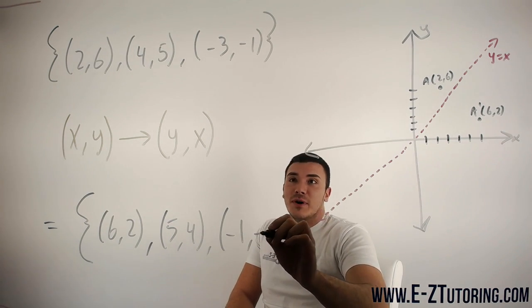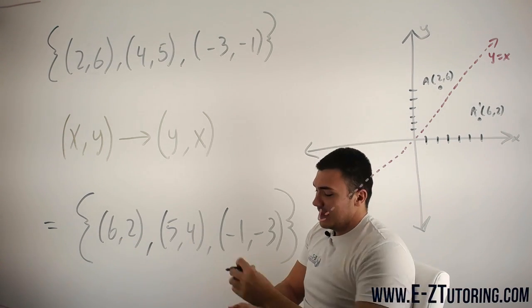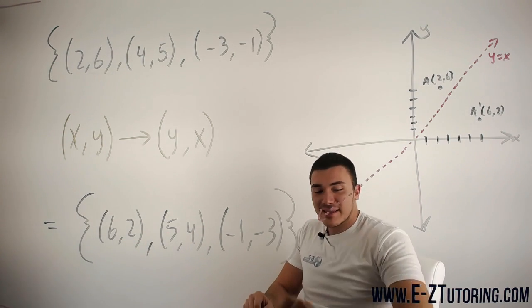and (-3, -1) goes to (-1, -3). That right there is your inverse of that set of coordinates.